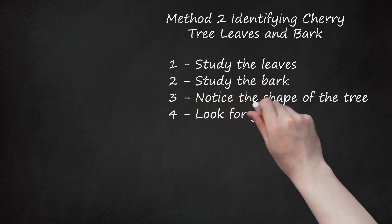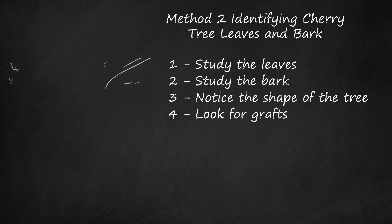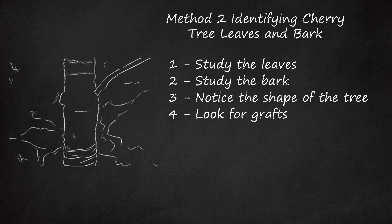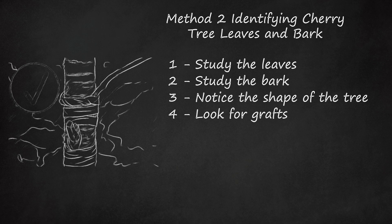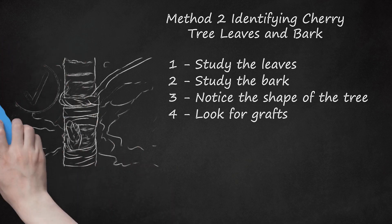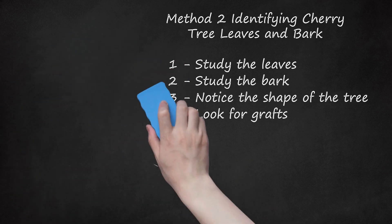Fourth, look for grafts. Fruit trees are often grafted, so they will produce fruit. On cherry trees, you'll find the graft placed on the trunk, near where the first branches emerge. Other fruit trees usually have grafts on the branches, making them look knotty.